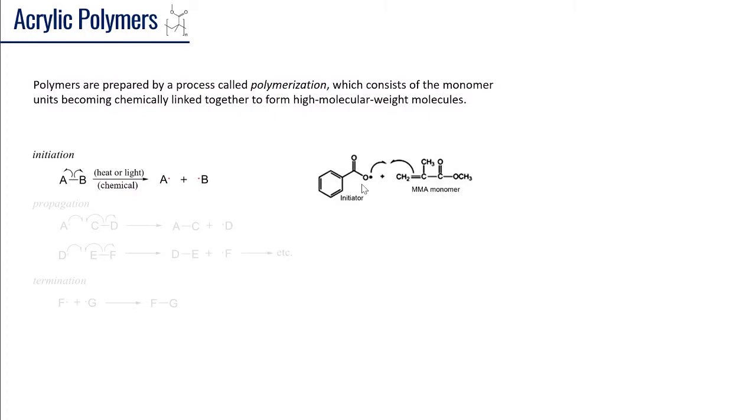In order for those free radicals to form, we have an initiator that has this free radical that will cleave that double bond there. Once that double bond is cleaved, it forms a free radical here.